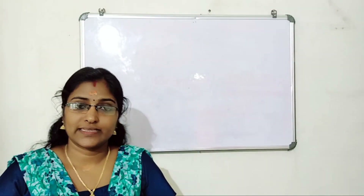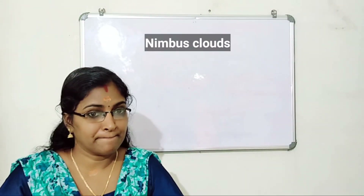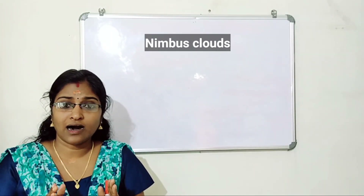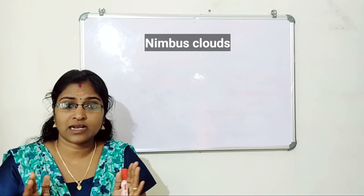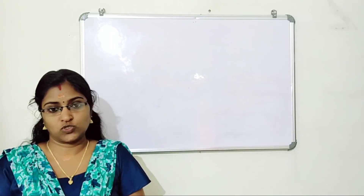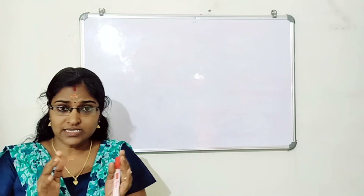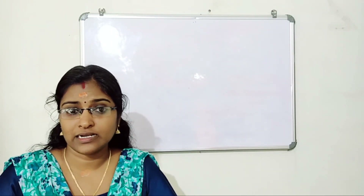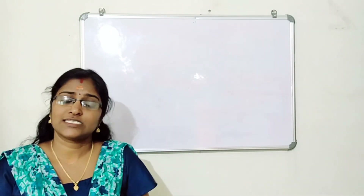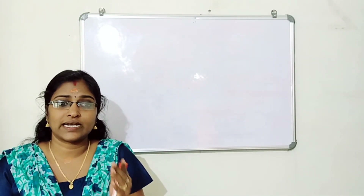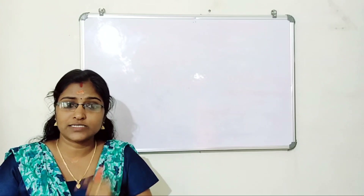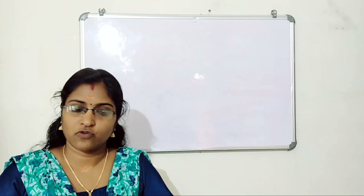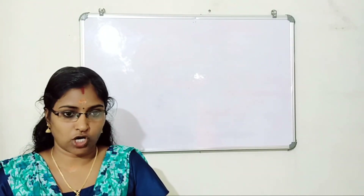Next, nimbus clouds. These are dark rain clouds in the lower atmosphere. They appear dark because they do not allow sunlight to pass through, due to a thick concentration of water droplets.